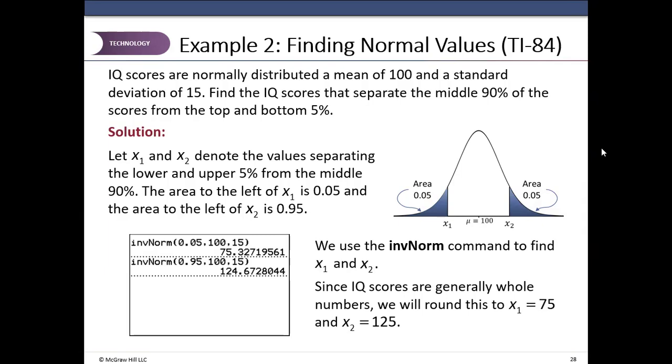How about X2? Area to the left of it is the area in the center, which is 0.9, area in the center is 0.9, middle 90 percent, and then we have area in the left tail, which is 0.05. Total area to the left of X2 is then 0.9 plus 0.05, which is 0.95. So second vars 3, area is now 0.95. Why? Area to the left of X2 I want to find out. Area in the center is 0.9 plus area in the left tail is 0.05. That is 0.95. That's why we plug in for the second X2 value, area to the left as 0.95. And I paste, enter and enter, and the answer is 124.673 or 125.